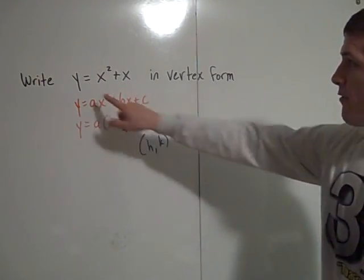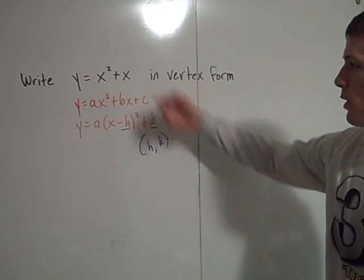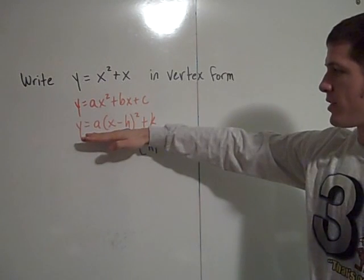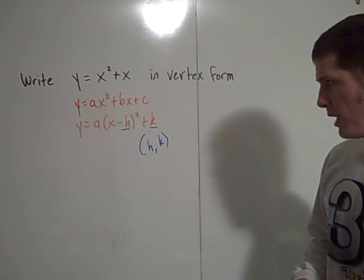So this is given in standard form. The a value is 1, the b value is 1, and the c value is 0. We want to write it in this form, y equals a times the quantity x minus h squared plus k.